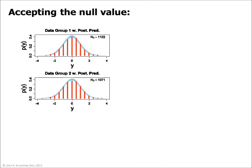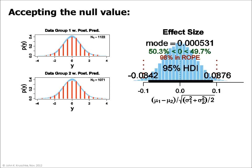By enhancing the decision rule, Bayesian methods can also accept the null value. For example, consider the large samples of data shown by the red histograms. The resulting posterior distribution is very precise. In particular, the posterior distribution on effect size shows that the 95% HDI is very narrow, falling completely between negative 0.1 and positive 0.1.